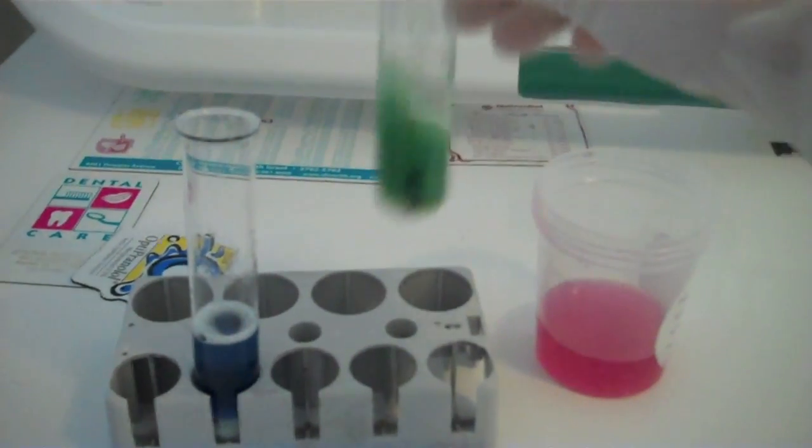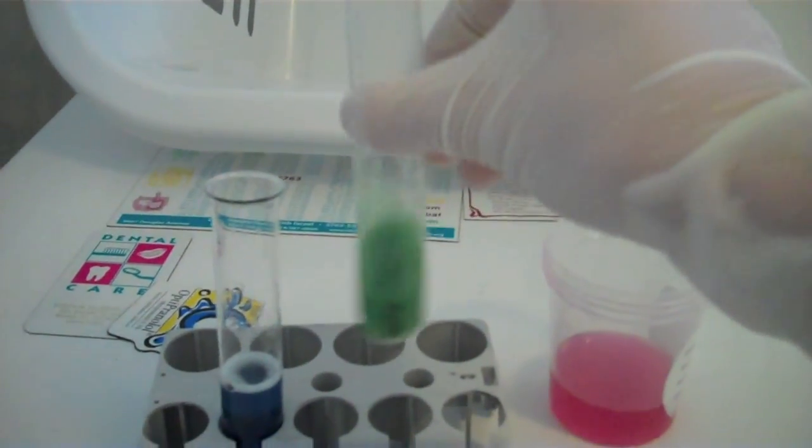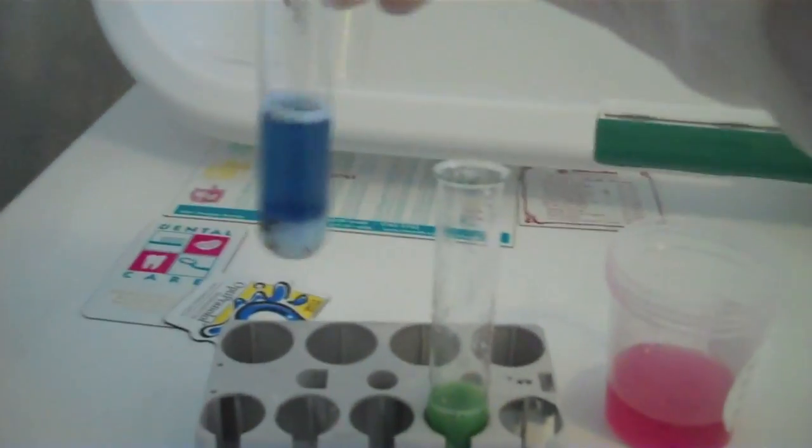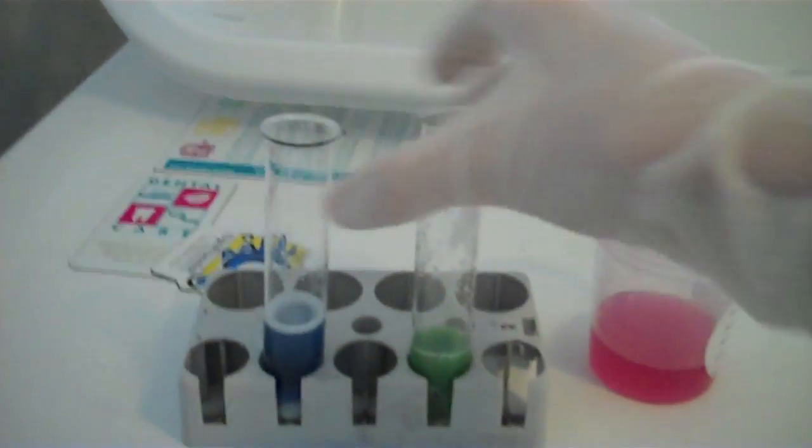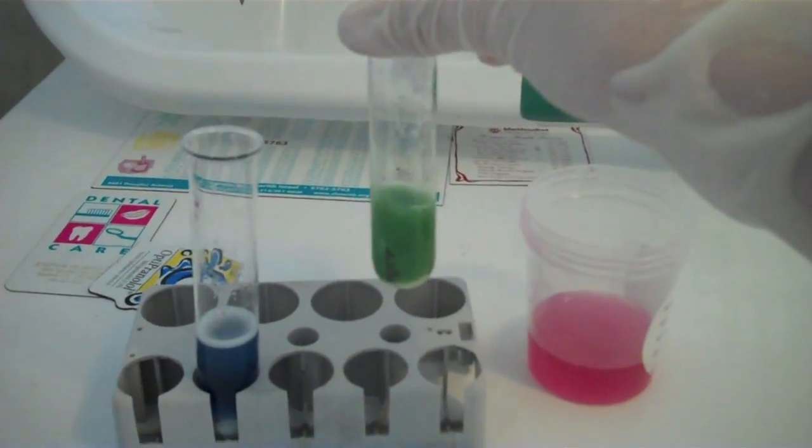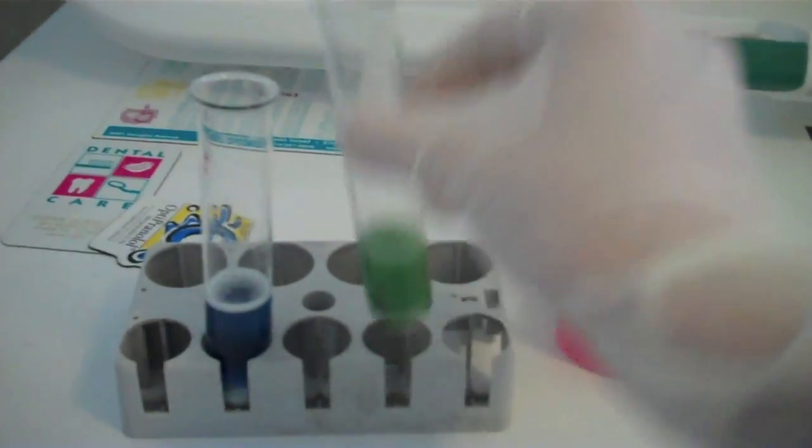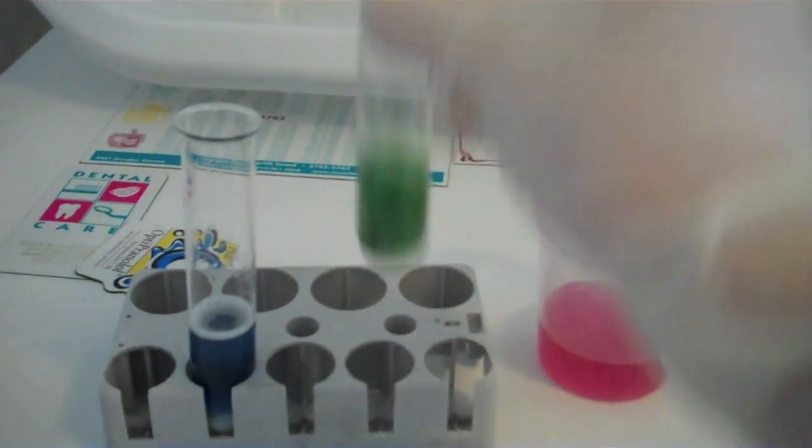As you can see, when I added the pH indicator made out of red cabbage to some sodium carbonate which I made in this video, it became green while the sodium hydrogen carbonate became blue. This is because sodium hydrogen carbonate is a weaker base. This indicates that we have made some sodium carbonate.